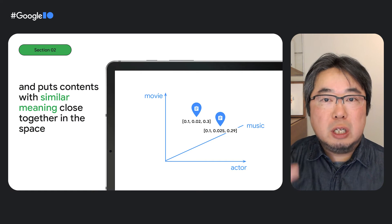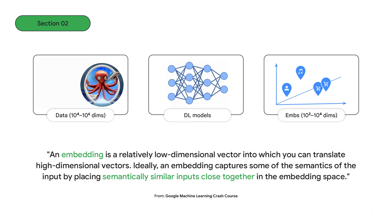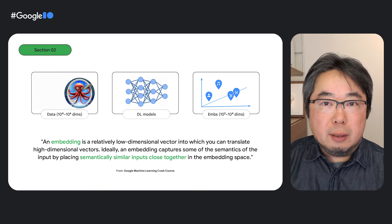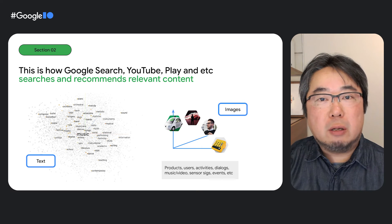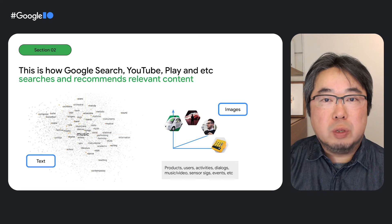The AI can put content with similar meanings closely together in the same space. According to Google's Machine Learning Crash Course, embedding refers to the process of mapping high-dimensional raw data, such as images or text, which have tens of thousands or millions of dimensions, to a lower-dimensional space with hundreds or thousands of dimensions using deep learning models. This is done to extract the meaning or semantics of the data. This is how Google organizes data across various services like Google Search, YouTube, Play, and many others to provide relevant search results and recommendations.